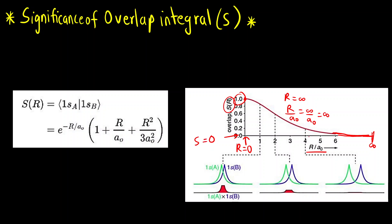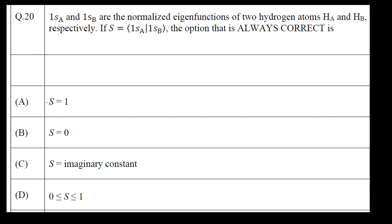In between, you can see there is some orbital overlap present, and as the R value keeps increasing, the overlap decreases and becomes very minimum. At infinity, the overlap integral is 0. So S ranges from 0 to 1. Therefore, the correct answer is option D — the value of S, the overlap integral, ranges from 0 to 1. I hope you have understood this concept of overlap integral. Thank you.